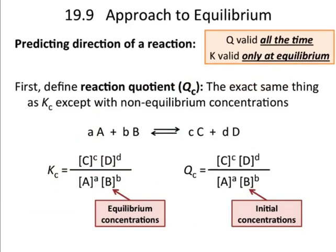So, Q is valid all the time. K is valid only at equilibrium. When you're at equilibrium, Q is equal to K. Feel free to replay that a couple times to get it to sink in because it's something that people tend to mess up.